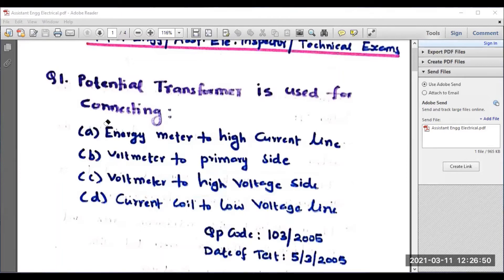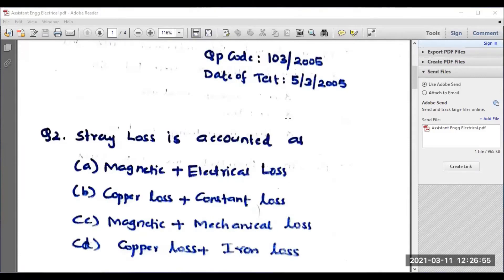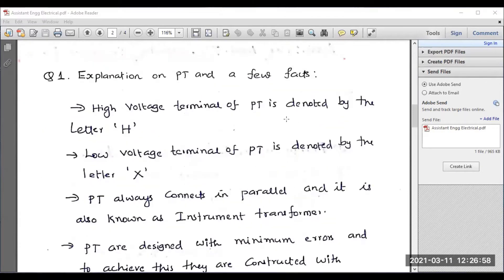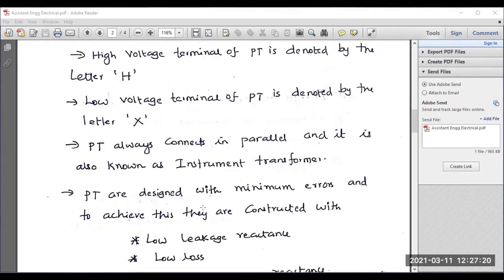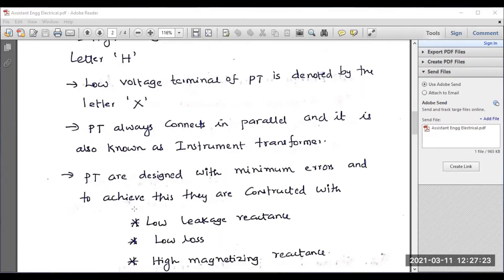Let us understand a few points about the potential transformer. High voltage terminals of PT is denoted by the letter H. Low voltage terminals is denoted by the letter X. PT always connected in parallel and it is also known as instrument transformers. PT are designed such a way that minimum error should be occurred.